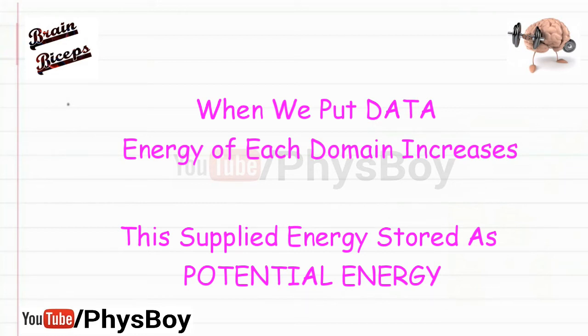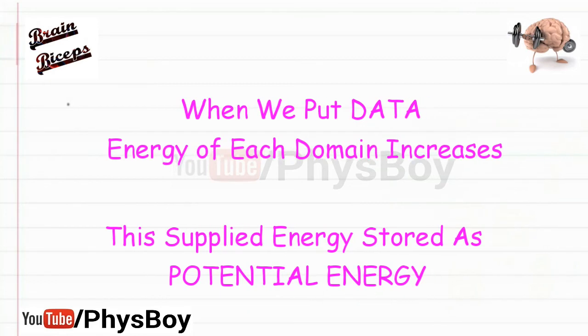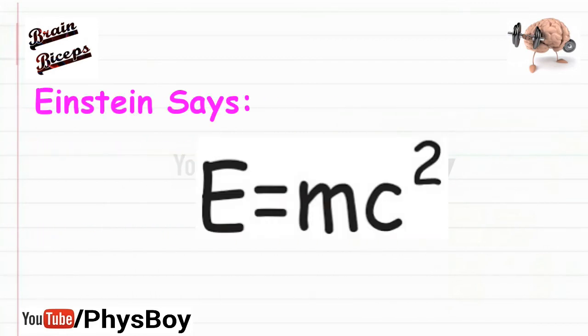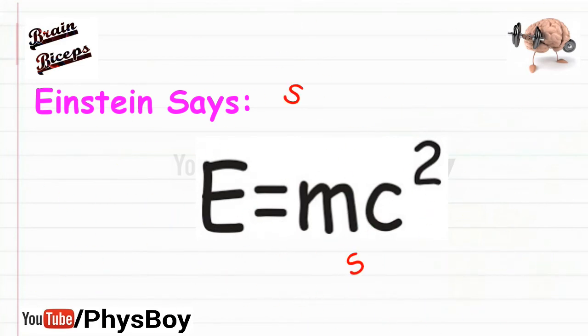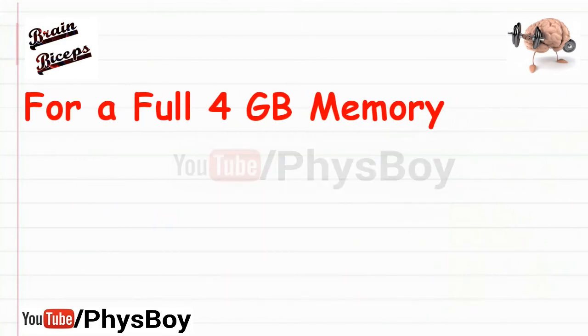Now, as per Einstein's most famous formula, E = mc², energy is equivalent to mass. So E = mc² makes clear the potential energy stored in the magnetic domain due to the orientation is equivalent to mass and will have weight.